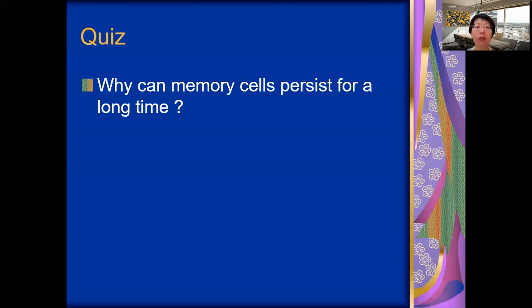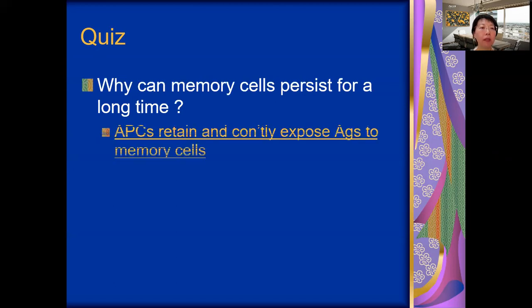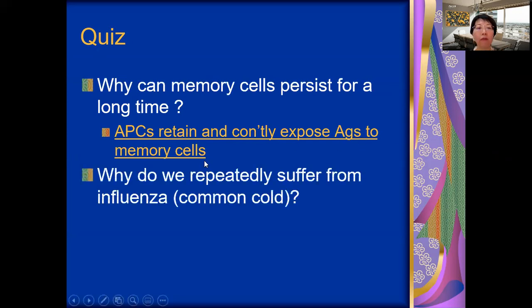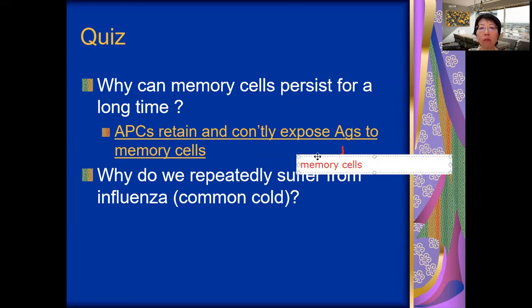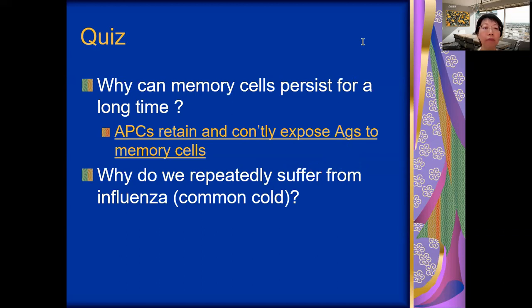Why can memory cells persist for a long time in the body? We have to thank our antigen presenting cells. APC cells retain the antigen and continuously move around the body to expose that antigen to the memory cells. When memory cells are exposed to antigen, they divide and differentiate to form more memory cells as well as plasma cells. That's why memory cells continue to remain in our body - old memory cells can die, but the body keeps producing new memory cells.